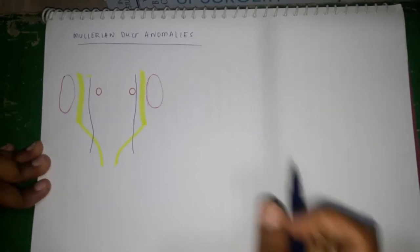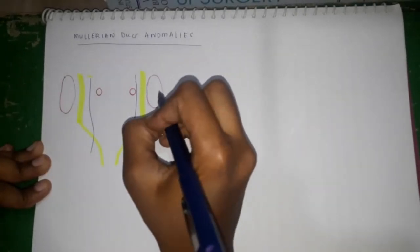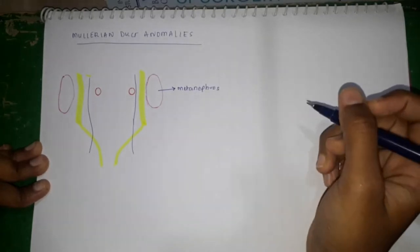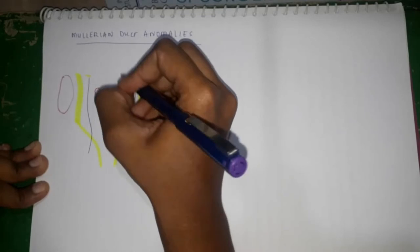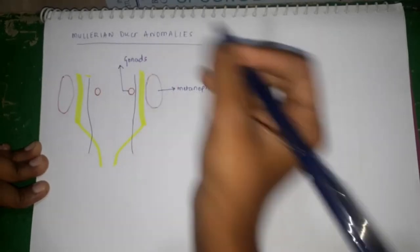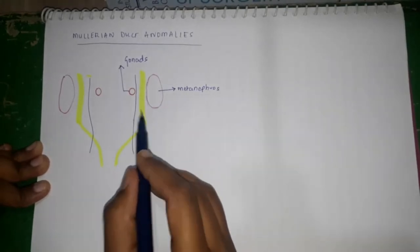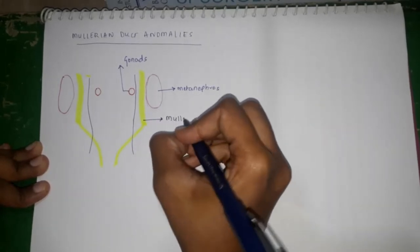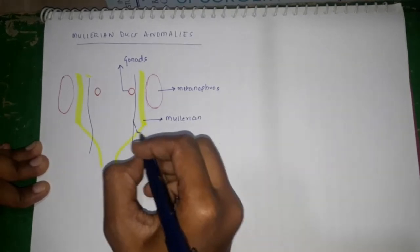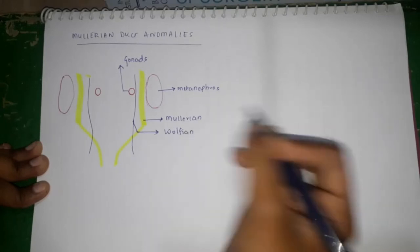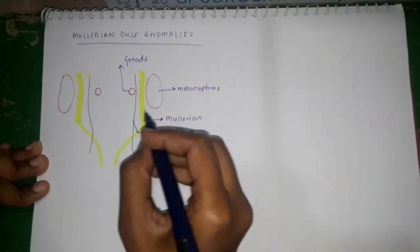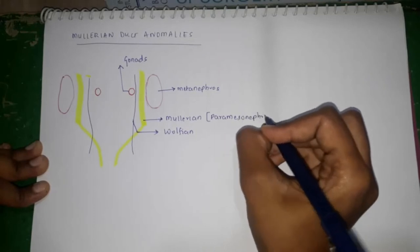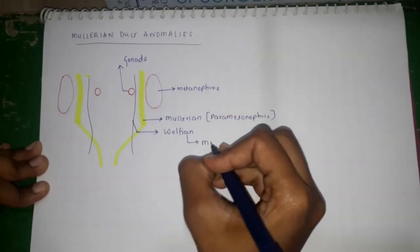This is a basic schematic diagram. The structure here is known as the metanephros. The metanephros is useful in the formation of the kidneys. There is one more rounded structure present medial to it that will form the primordial gonads. In between these two structures there are two tube-like structures developing from the mesoderm. The one present laterally is called the Müllerian duct, or paramesonephric duct, and the one present medially is called the Wolfian duct, or mesonephric duct.